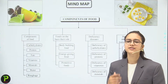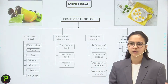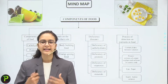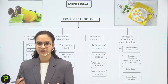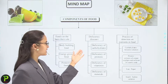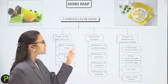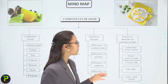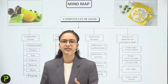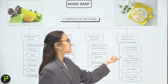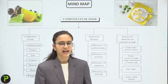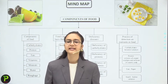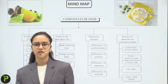Food can be classified into three categories based on its role in our body. Deficiency diseases arise when a nutrient is not present in sufficient amounts — for example, deficiencies of carbohydrates, proteins, vitamins, and minerals each cause specific diseases. We can also test for nutrients: Benedict solution for glucose, copper sulfate and caustic soda for protein, paper for fats, and iodine solution for starch.